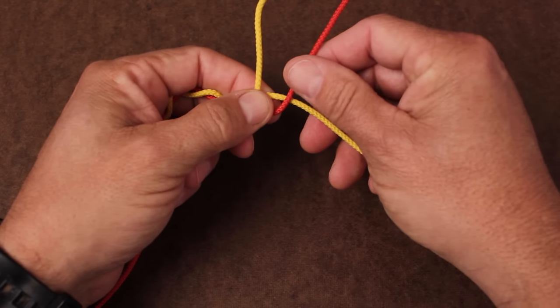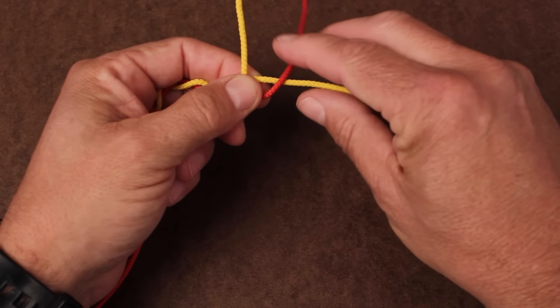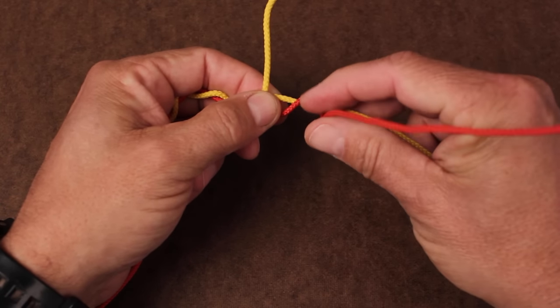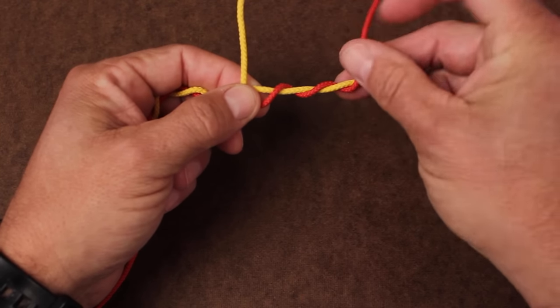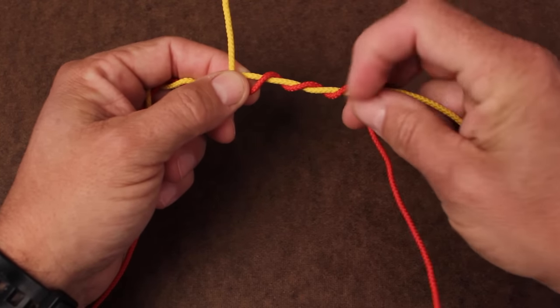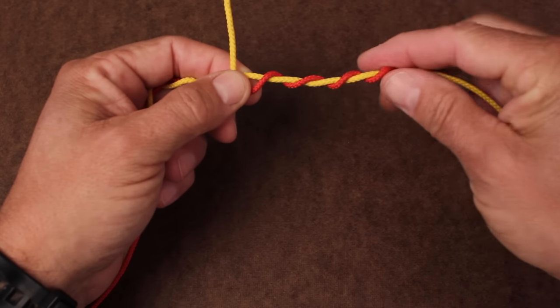Now take the tag end of the heavier material and start making wraps in the opposite direction. In other words, when the tag is pointed up, you're pushing it away from you to take wraps. Once again, make 4 complete wraps with the tag.